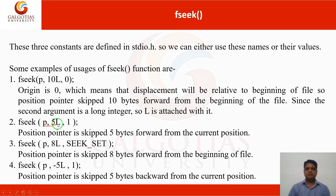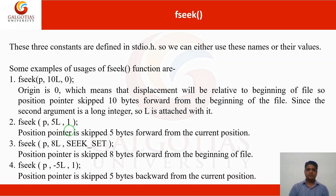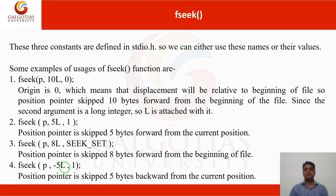In the second example: fseek(p, 5L, 1) — 1 is the current position and 5 means forward direction. In the third example using SEEK_SET: SEEK_SET is the beginning of the file, 0th position — 8 bytes forward from the beginning. For fseek(p, -5L, 1), the negative value means you are moving in the backward direction from the current position.